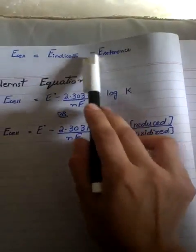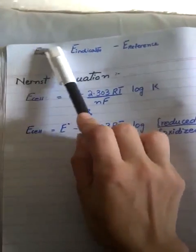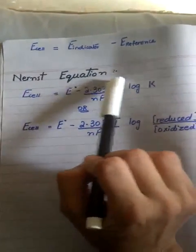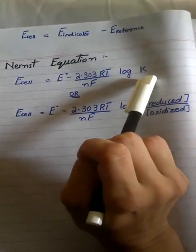So with the help of this indicator and reference potential, we can easily find out the EMF of the cell. And this EMF will be used in the Nernst equation to find out the concentration of the solution.